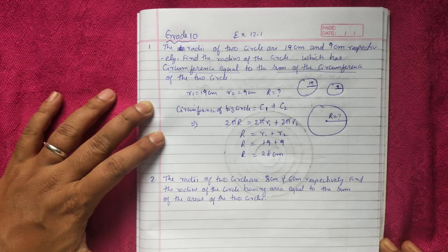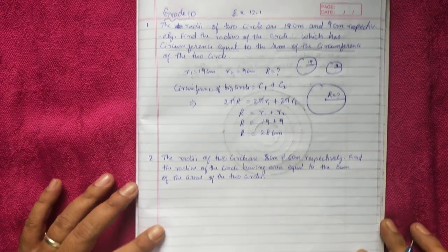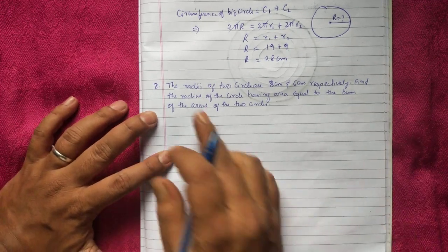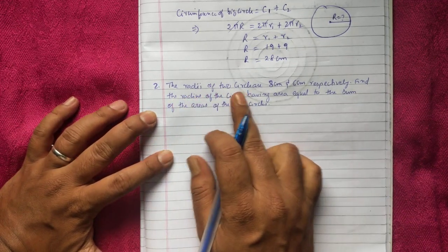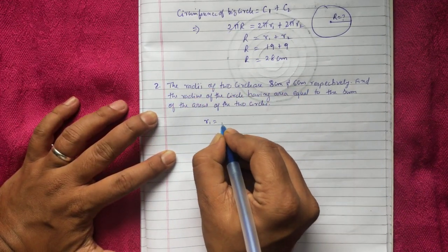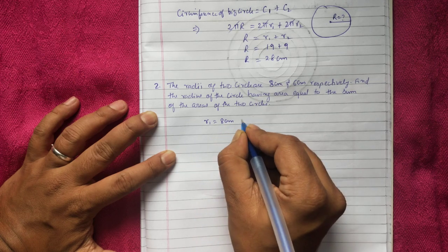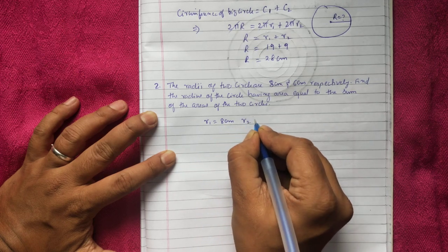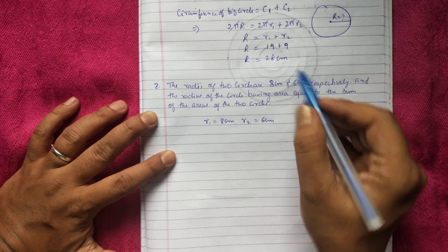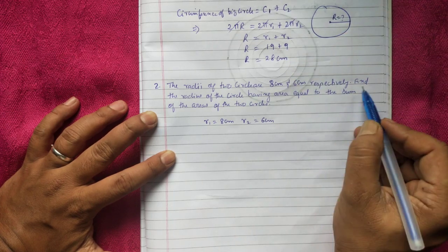Let's go to the next question. Here also, the radius of 2 circles are given. I'll take R1 = 8 cm and R2 = 6 cm. The condition given is similar to question number 1, but here it involves area.